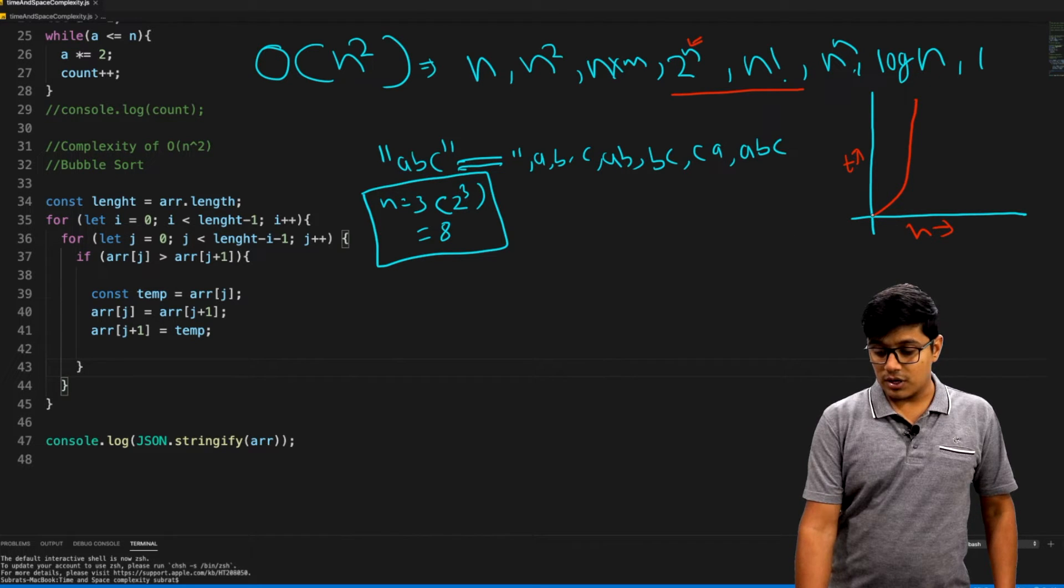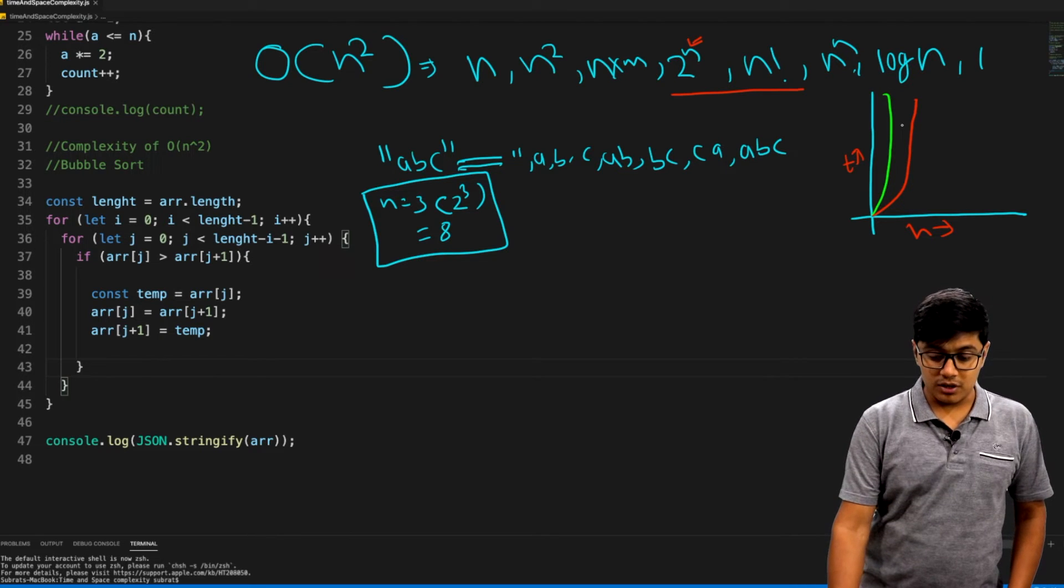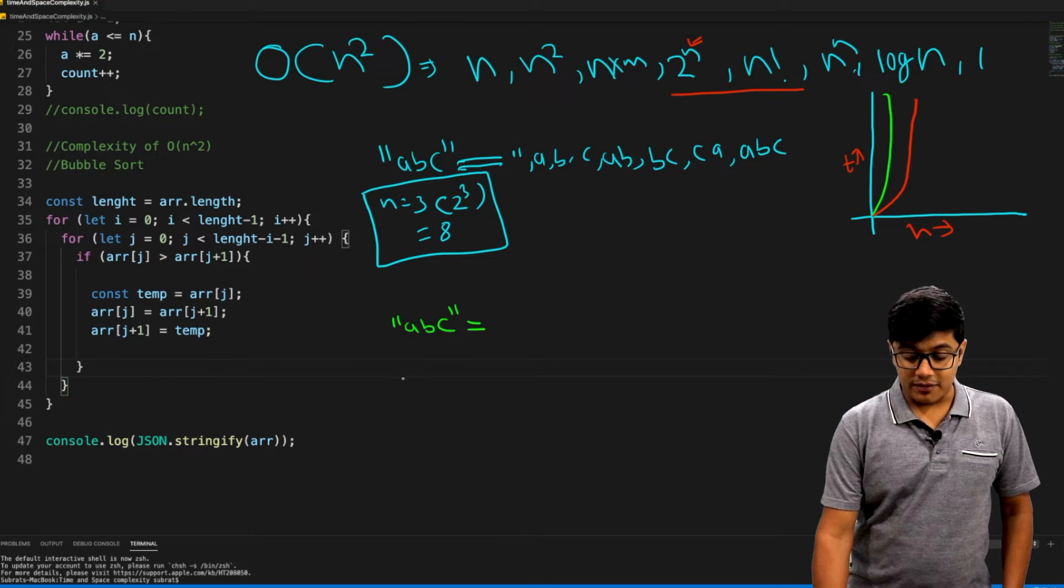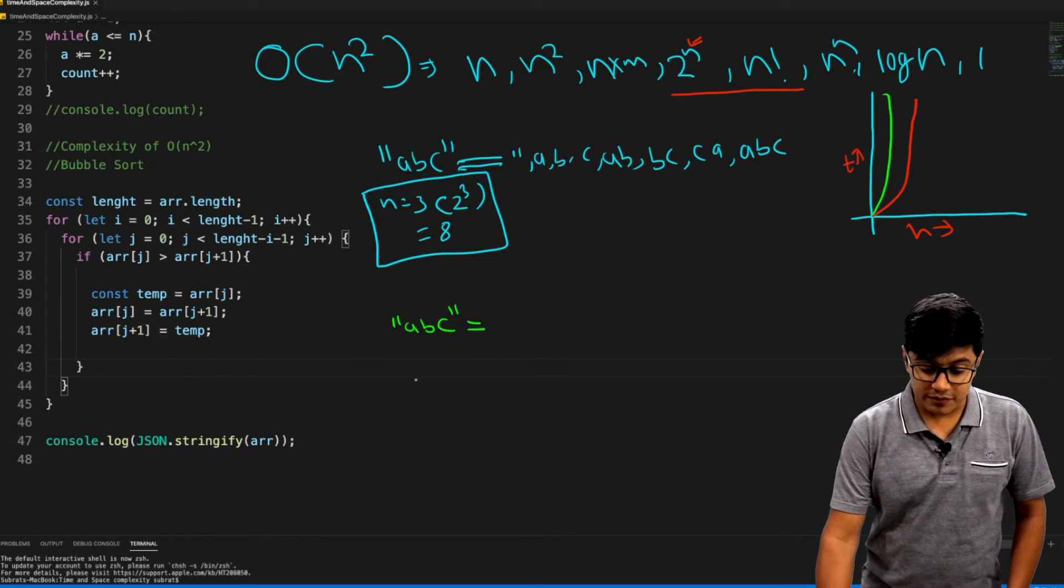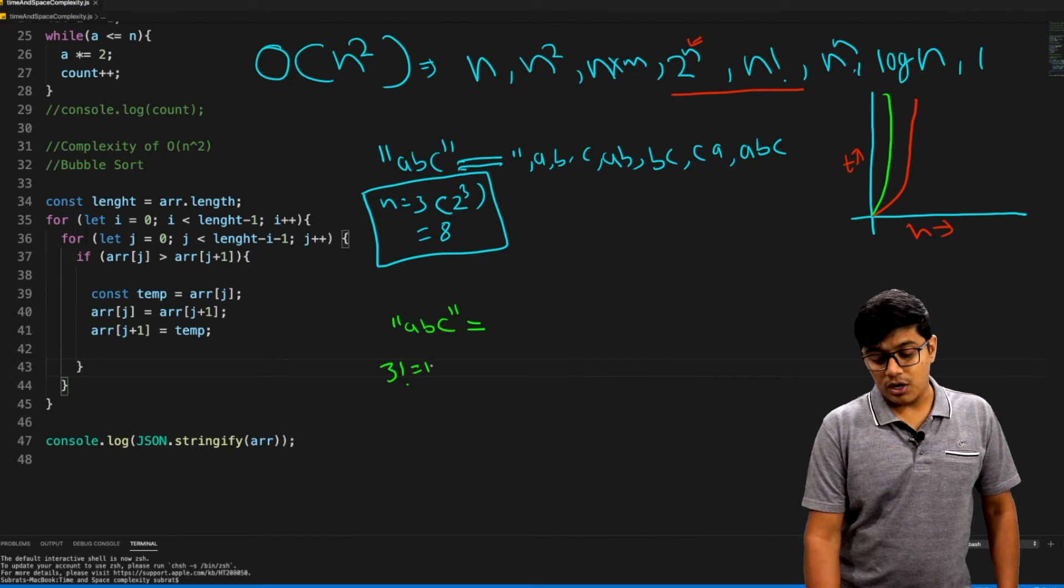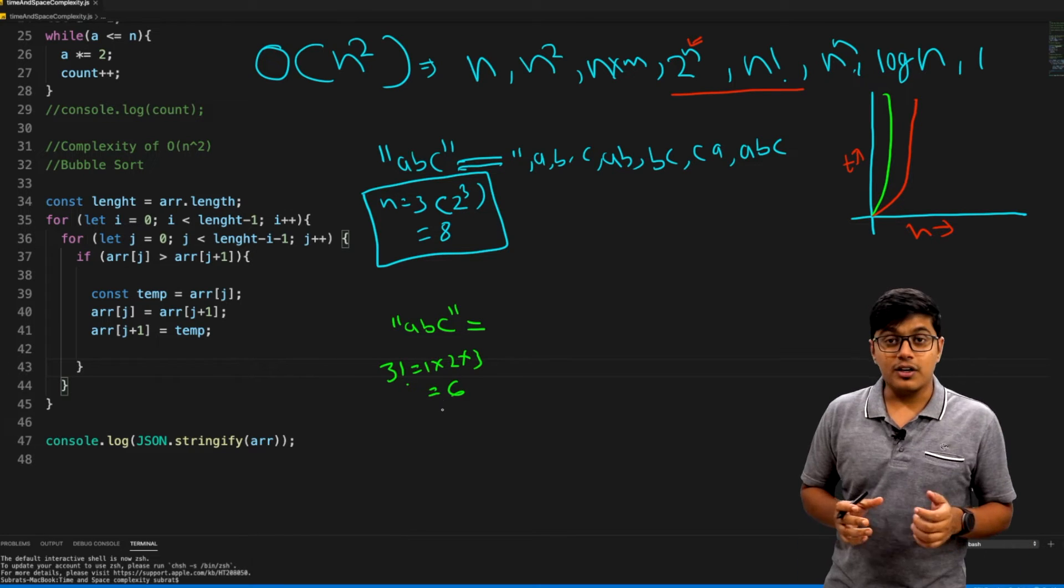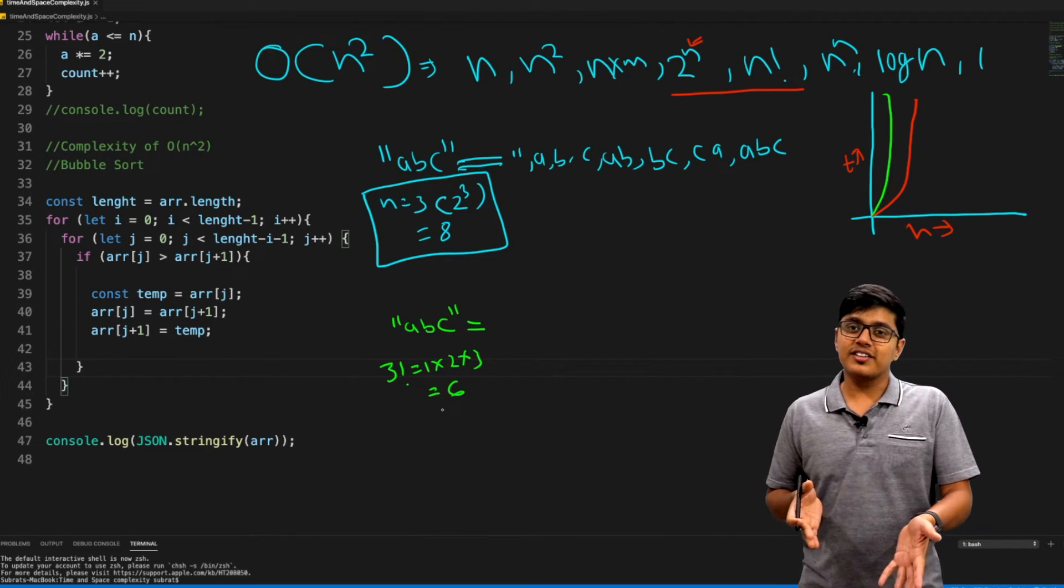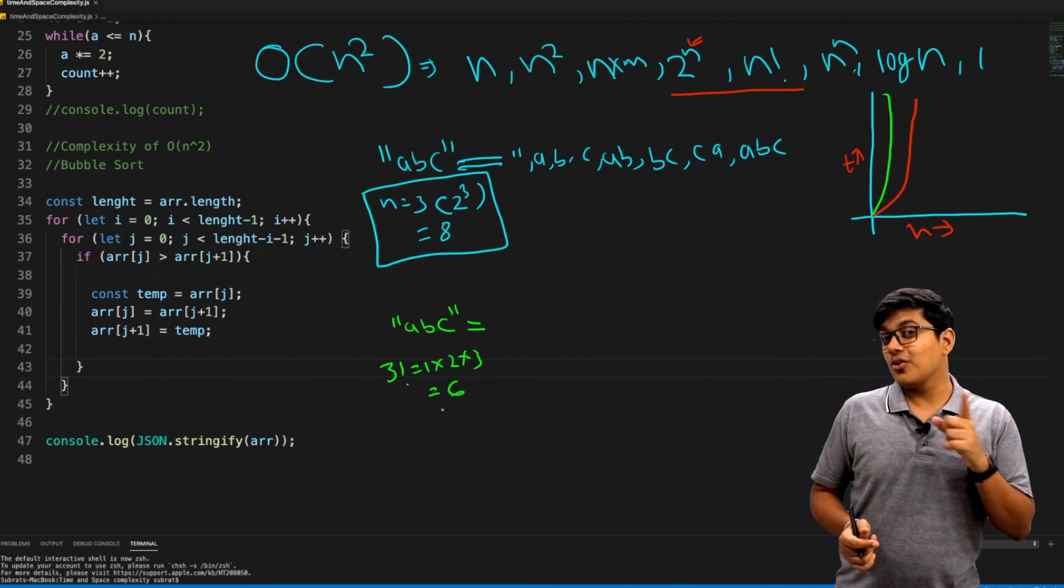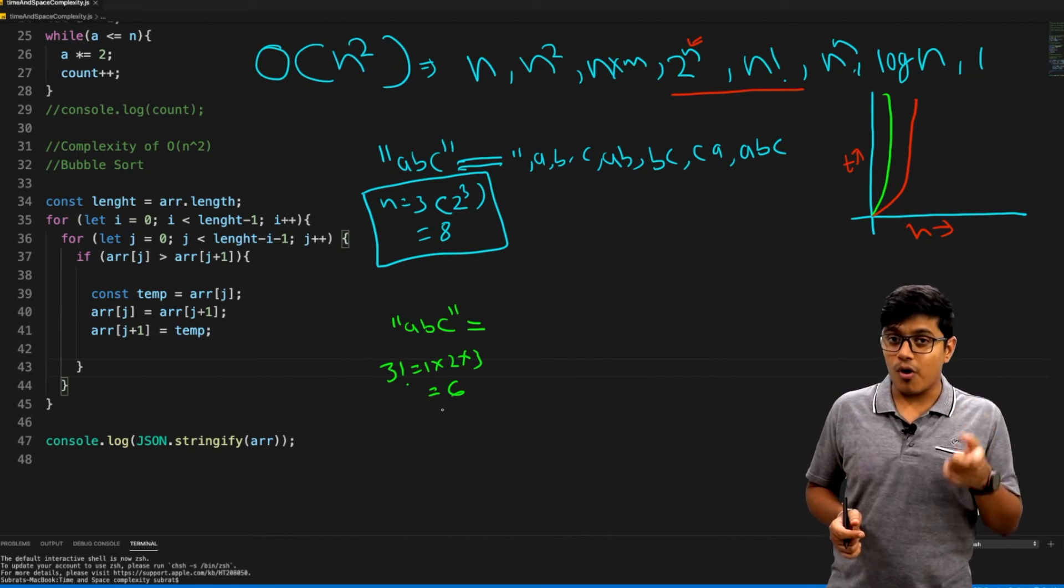What it will do is it will keep on calling itself, and the number of times you are calling needs to be added up again. That becomes n factorial. Now this graph will be a little steeper. It will look like this. We will take the same example here, ABC. For finding n factorial, n is 3, so 3 factorial will be 1 into 2 into 3, equal to 6.